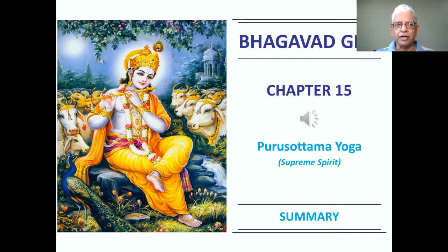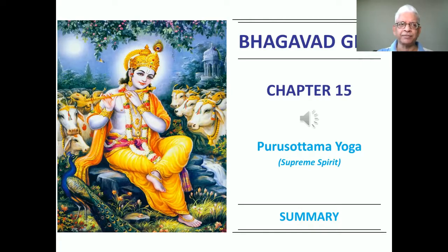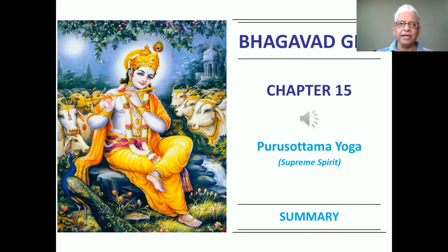We start with Tattva Bodha, then we do Atma Bodha. Tattva Bodha is a text which gives us all the definitions of terms used in the Bhagavad Gita, the Upanishads, and the Brahma Sutra. Atma Bodha is an introductory text dealing with Atma, which is the focus of all three texts.